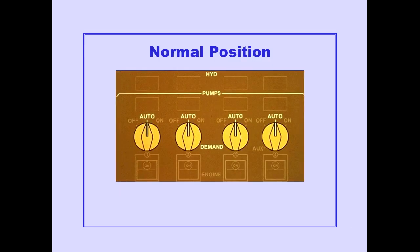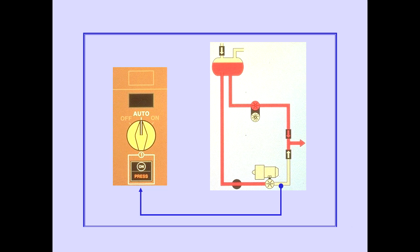The normal position for the demand pump selector is auto. With the selector in auto, the demand pumps operate automatically when engine pump pressure is low. During normal operations, the demand pump pressure light will remain extinguished.